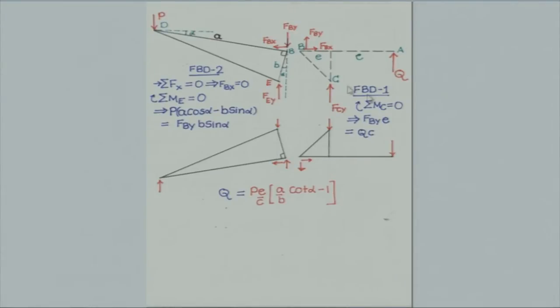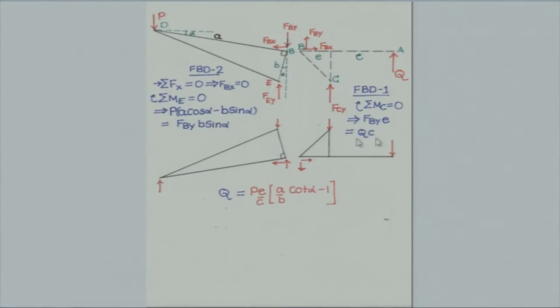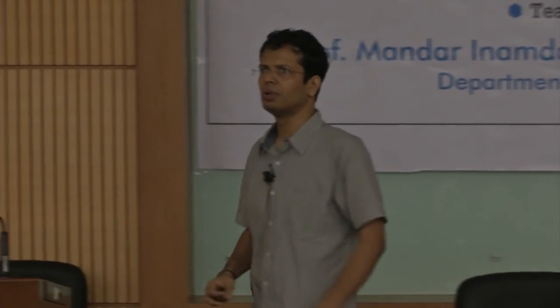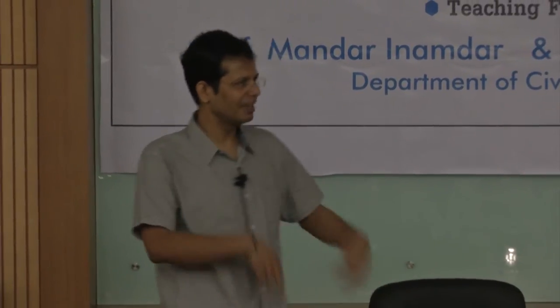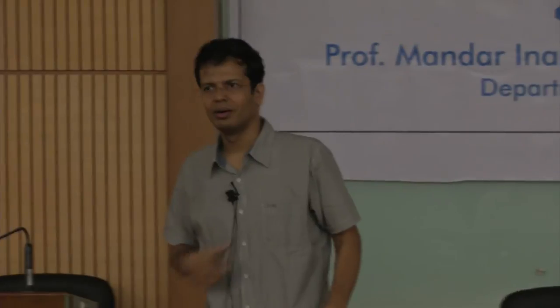The clamping force is trying to rotate the jaw free body diagram about point C. Taking moment about C equal to zero, and since FBx is zero, we get FBy times e equals clamping force times c. Using these two equations, Q is given by P·(e/c)·(a/b)·(cot α − 1). Some students got close answers; if done at leisure you will get exactly this.